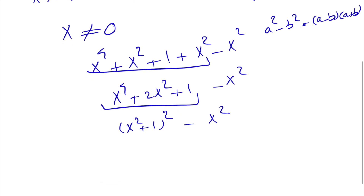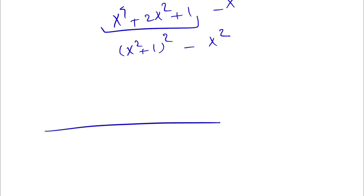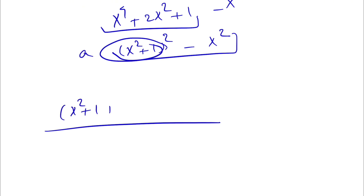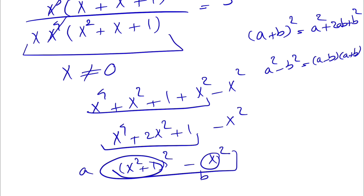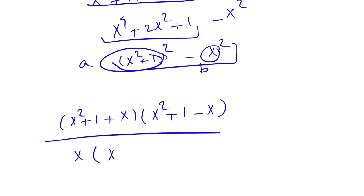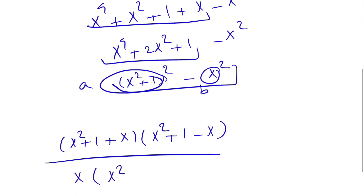So we can write the numerator in a simpler way. Our a is x squared plus 1 and b is x. So the numerator factors as (x squared plus 1 plus x) times (x squared plus 1 minus x). And our denominator is x times (x squared plus x plus 1), which equals 3.